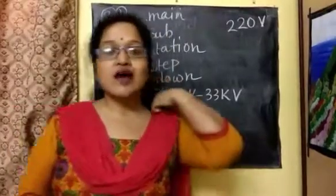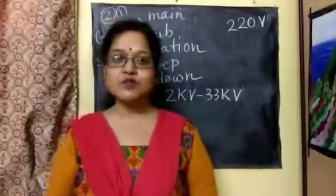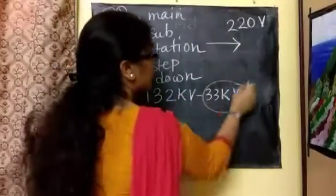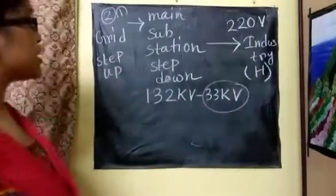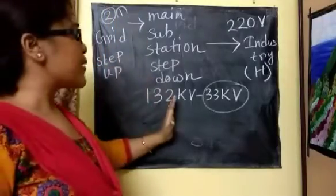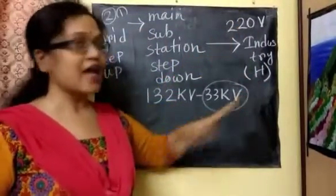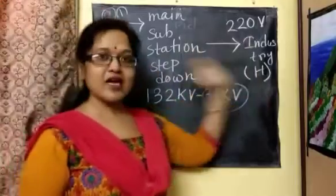In our state or country there are various requirements — some heavy industries and some light industries. Heavy industries that need 33 kilo volt of energy receive it directly from the main substation. But our home requirement is still nearly 220 volt, so we still don't have 220 volt. The remaining 33 kilo volt then goes from the main substation to the intermediate substation.